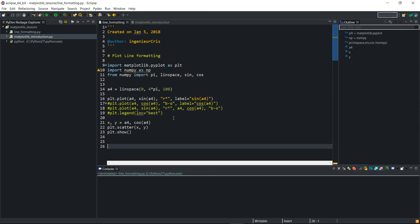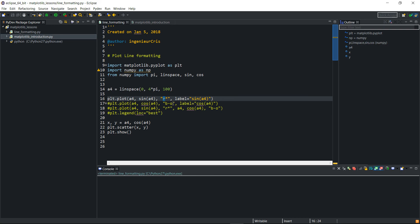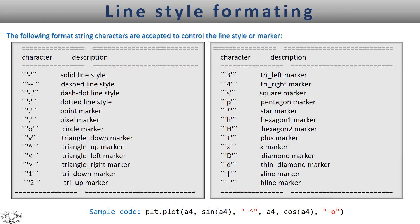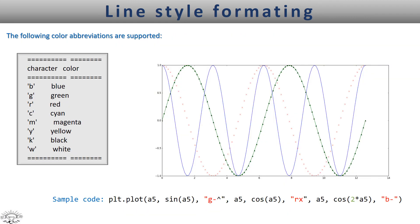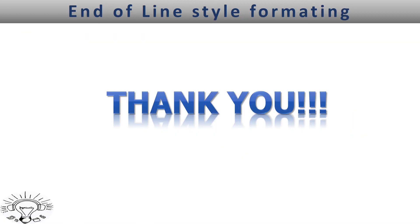This is where I'd like to end this tutorial. At this point you can format your line plots by specifying the colors you want, the markers, and whether you want the line to be plotted as well. As mentioned, you'll find all the line style markers and colors available in matplotlib in the reference shown. Thanks for watching — if you liked the video, give it a thumbs up and subscribe for more videos like this.